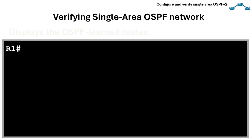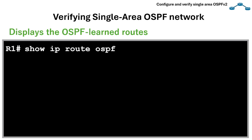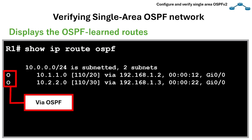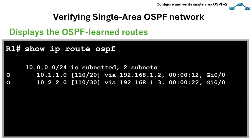The next command displays OSPF-learned routes in the routing table. We can use the command show ip route ospf to see the OSPF-learned routes. In this example output, the letter O means the route is learned via OSPF. So if you don't see O routes, it means OSPF isn't learning or advertising properly.